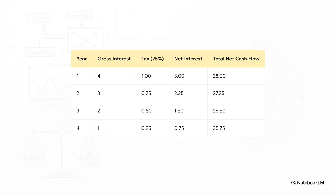In year one, we earned 4 in interest. 25% of that is 1, which goes to taxes. That leaves us with $3 in net interest. We add that to our 25 principal payment, and we get a total net cash flow of 28. We do that same calculation each year, and you can see our take-home pay gets a little smaller every single time.